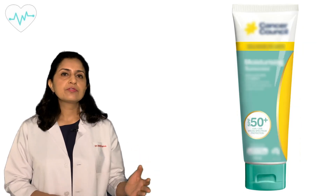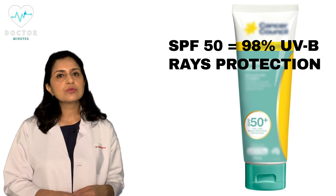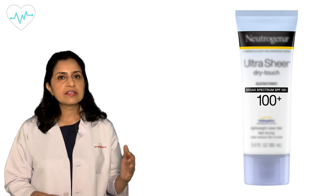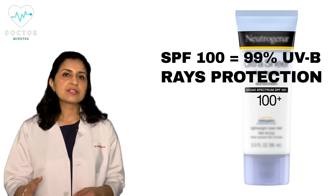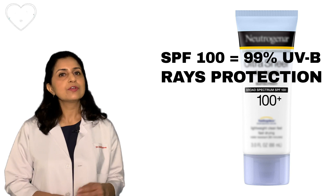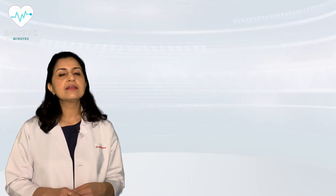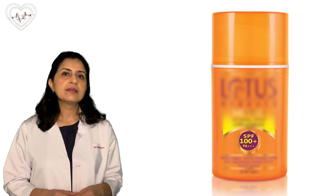If it is SPF 50, it gives you protection against 99% of UVB rays. So skin tanning, photo-aging, and pigmentation are not caused by UVB rays alone — UVA rays are also responsible. So to see at what level our sunscreen cuts UVA rays, we have to look at the PA Factor.